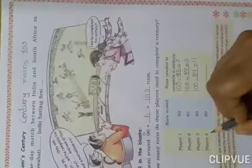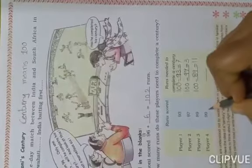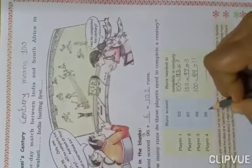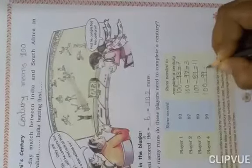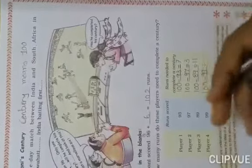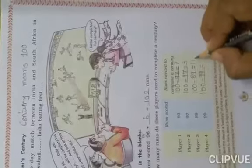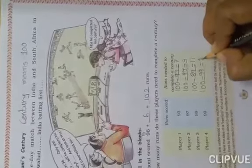Player number 4 having 99 runs. If he wants to complete his century, then we have to do 100 minus 99. And it is very much easy because you know that 99 after 100 — means only he needs one run.